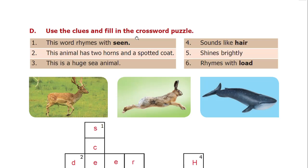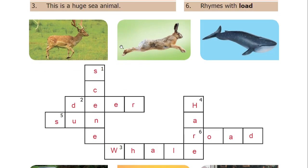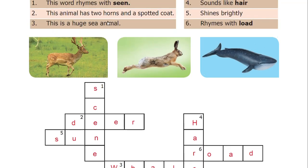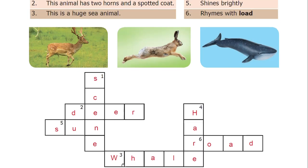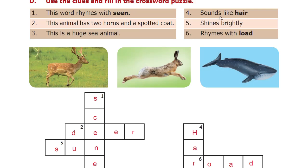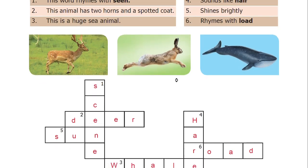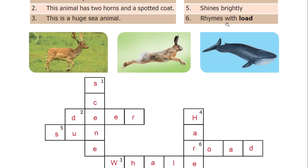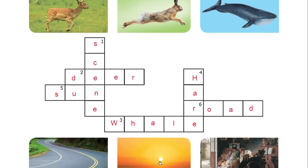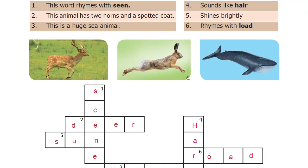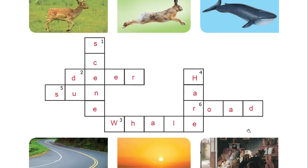Use the clues and fill in the crossword puzzle. One: this word rhymes with scene — answer: sea (S-E-A). Two: this animal has two horns and a spotted coat — answer: deer. Three: this is a huge sea animal — answer: whale (W-H-A-L-E). Four: sounds like hair — answer: hare (H-A-R-E). Five: rhymes with shines brightly — answer: sun (S-U-N). Six: rhymes with load — answer: road (R-O-A-D).